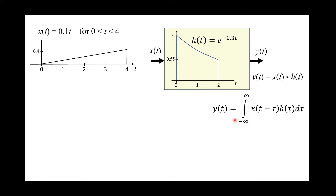The convolution integral is defined as the integral of the product of the input at different instants of time by the impulse response of the system. To explain the physical meaning of this integral, let's take this ramp as the input x(t) to the system.